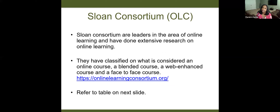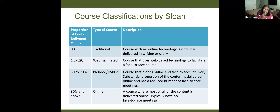Here's an organization I want to introduce: it used to be called Sloan Consortium, now they are called Online Learning Consortium. They are leaders in the area of online learning and have done extensive research specifically on online learning. They have a journal called Online Learning, which is open access — anybody can access any of the articles — and they also have a wealth of other resources on the website. What I want to show you today is a classification I always show to set the stage.